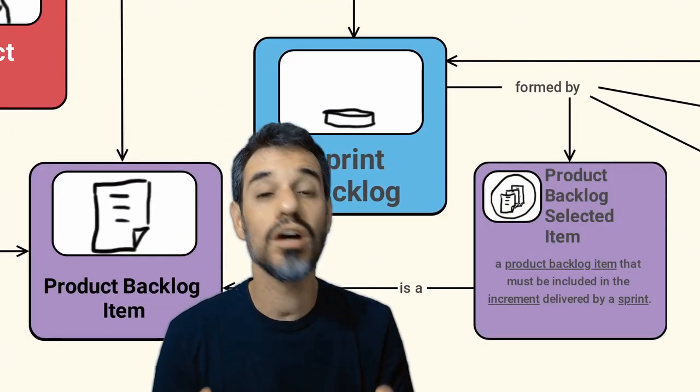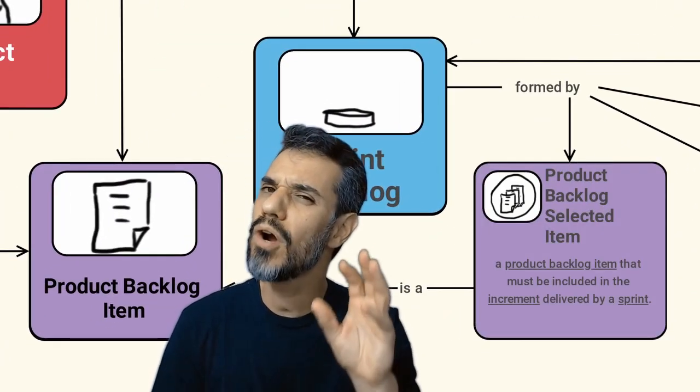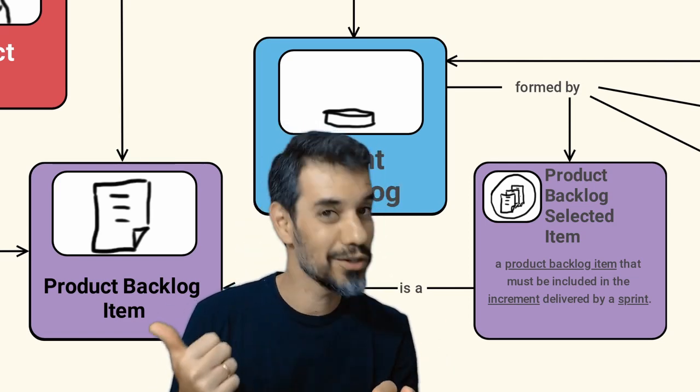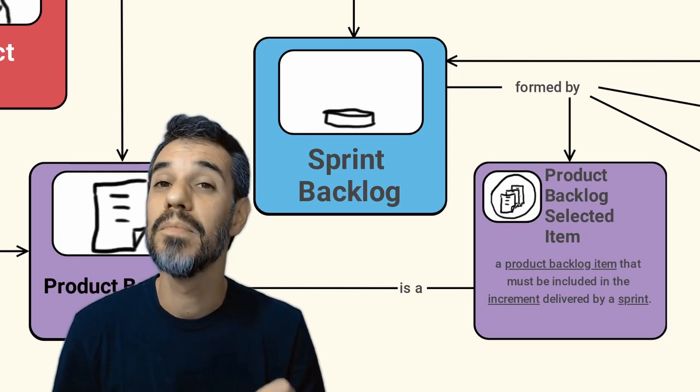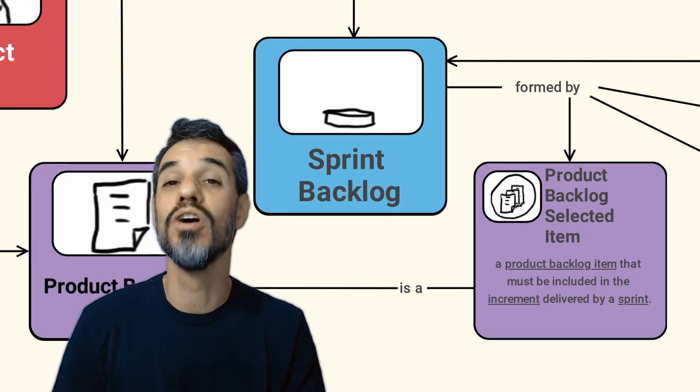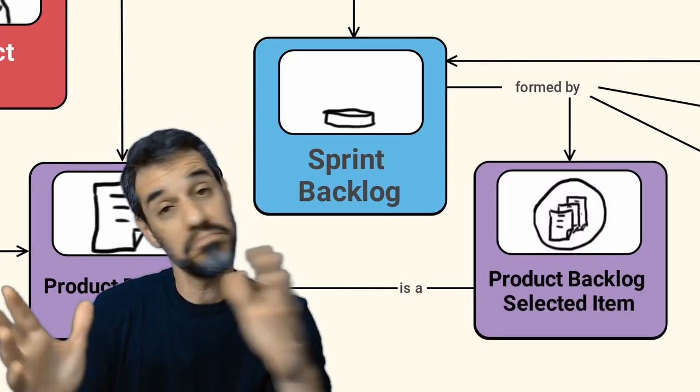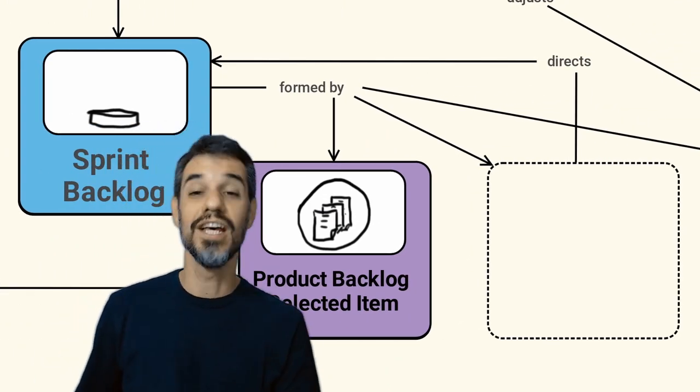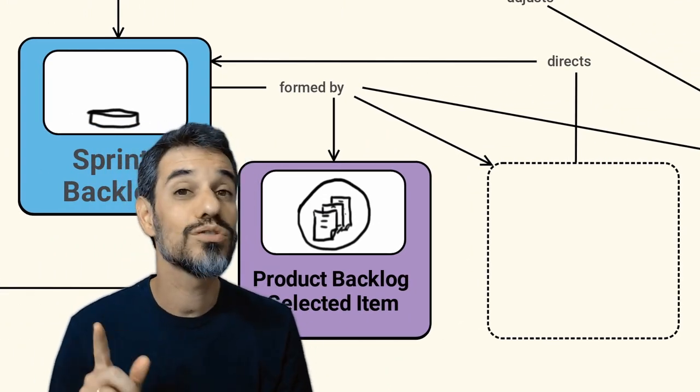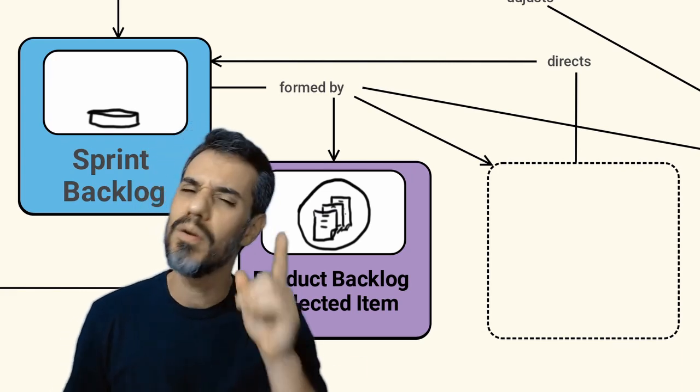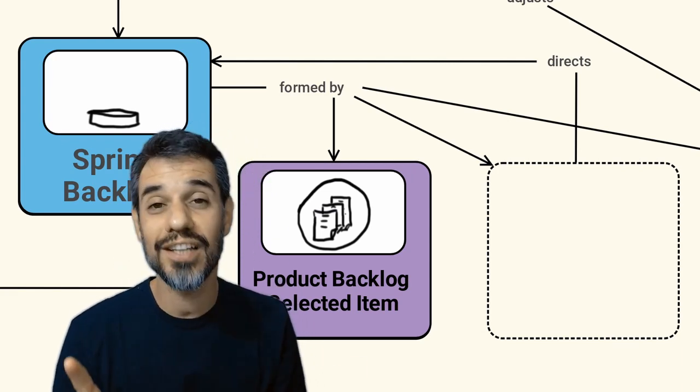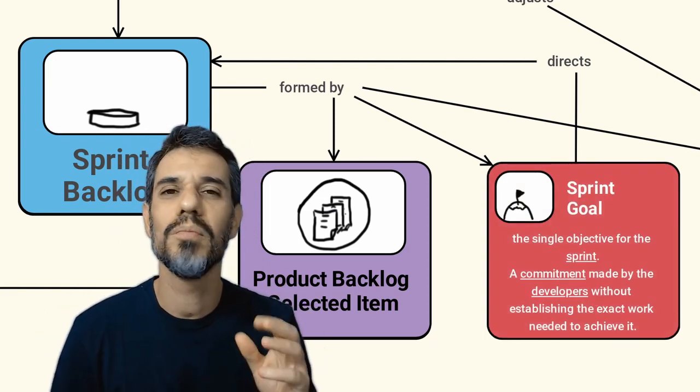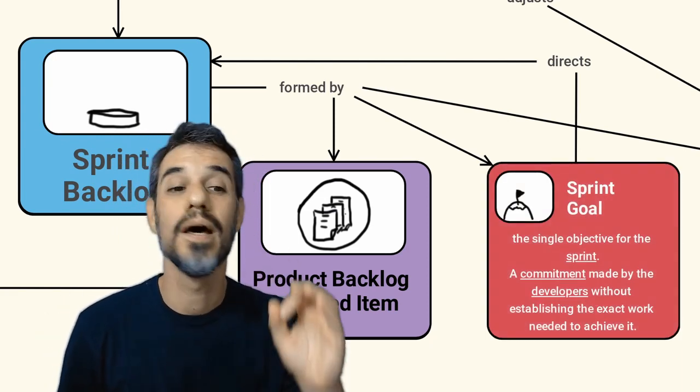A sprint backlog is formed by the product backlog items selected from the product backlog. The Scrum team must look for what is viable to be delivered during a sprint. Besides the product backlog selected items, the sprint backlog is also formed by a commitment. Remember that for each artifact there is a commitment. And for the sprint backlog the commitment is the sprint goal.